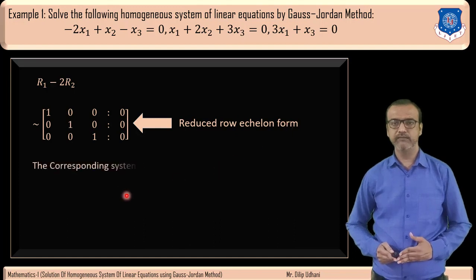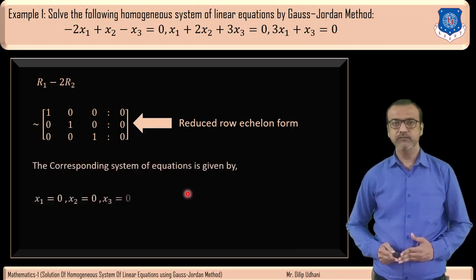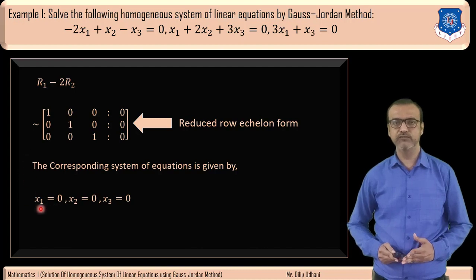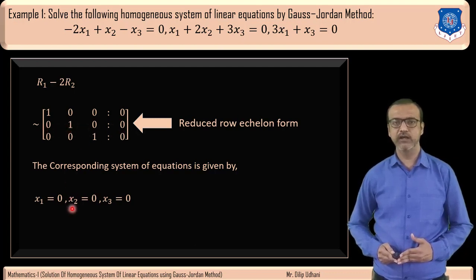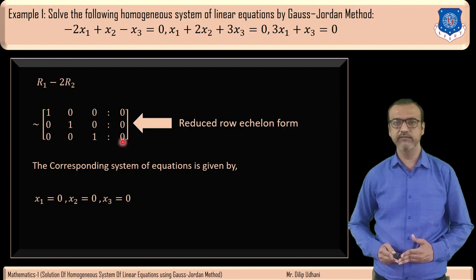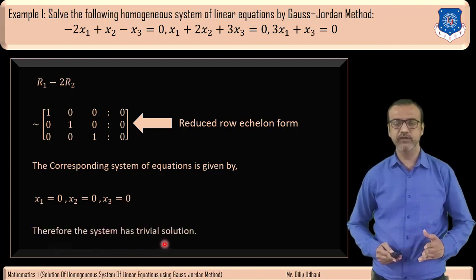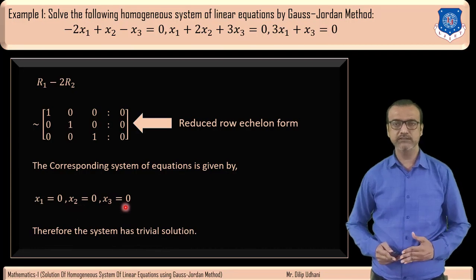The corresponding system of equations gives: from row 1, x1 = 0; from row 2, x2 = 0; from row 3, x3 = 0. Therefore the system has a trivial solution, as x1 = x2 = x3 = 0.